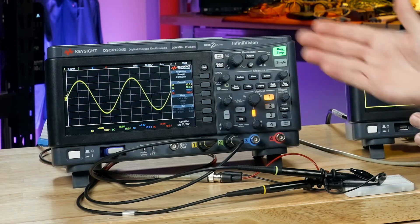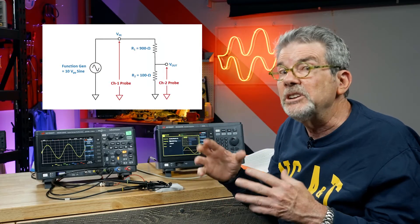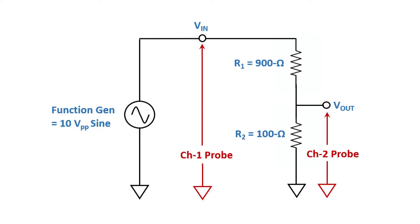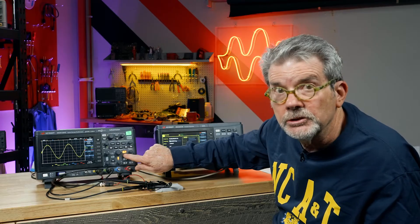So now we have the input signal on channel one of the oscilloscope, probing VIN of our circuit. What about the output — the voltage across R2 to ground? Let's turn on channel two so I'm probing in the proper place. Now we do exactly like before, but we only need to scale the vertical. The horizontal is already scaled for us, and we're triggering on channel one, so we don't have to adjust those.